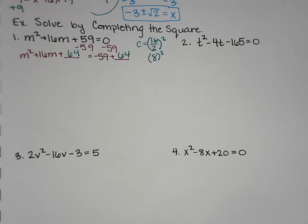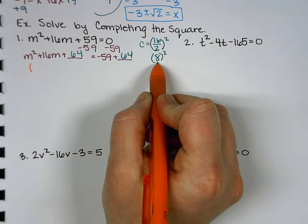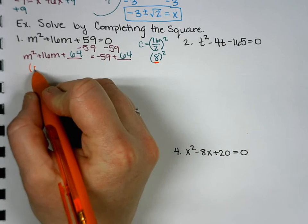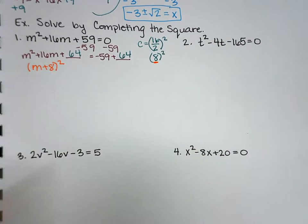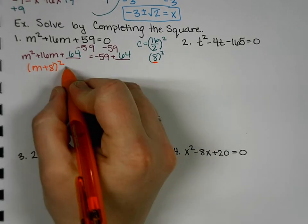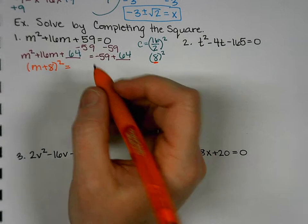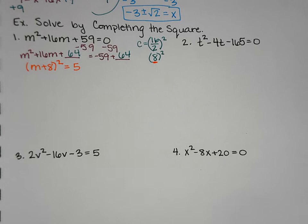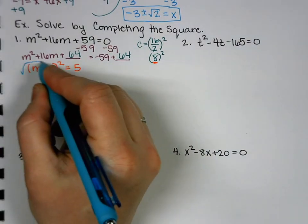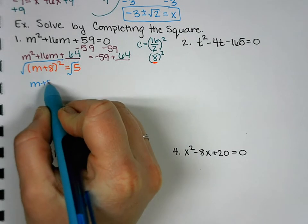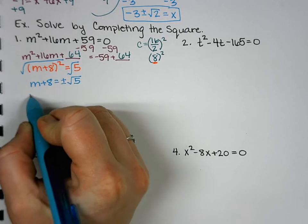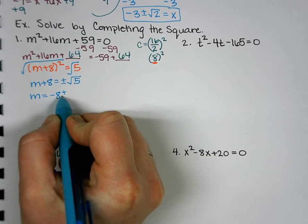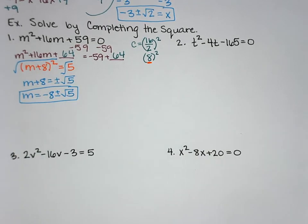Then we're going to factor and simplify. So when you factor this, the shortcut way to do it, is you look at what did you square here? 8. So it's going to be m plus 8 squared. Equals, and then what's negative 59 plus 64? 5. So from here on out, the completing the square part's done, we're now solving by square roots. So square root both sides, and subtract 8. And there's your answer.